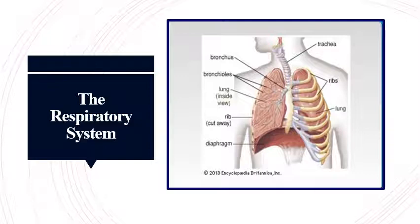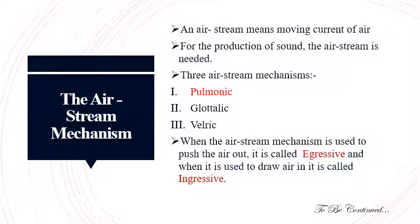This system is important in the production of speech because we need air for speaking. The function of the respiratory system is to provide the air stream, which is the basis for the production of speech sound. This air stream can be called a moving current of air. This air stream acts as a source of energy and is modified by the speech organs as it passes in and out of the lungs during the normal course of breathing. For the production of sounds, we need an air stream, which will become clear if we do a simple experiment.